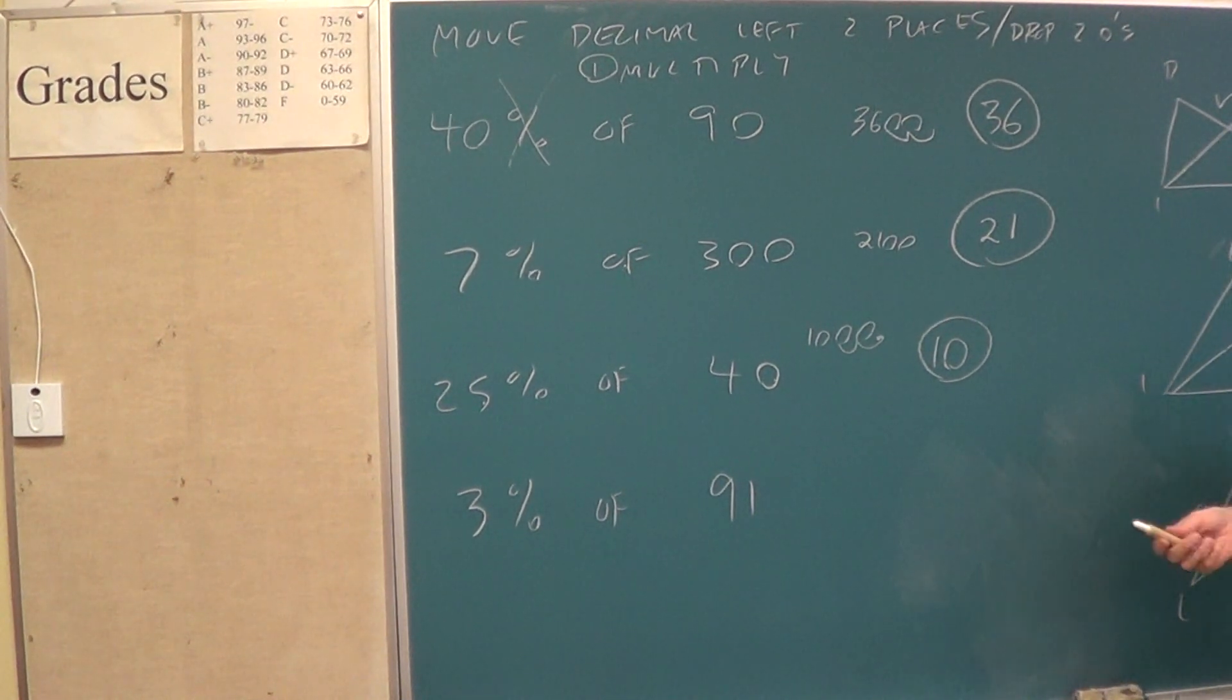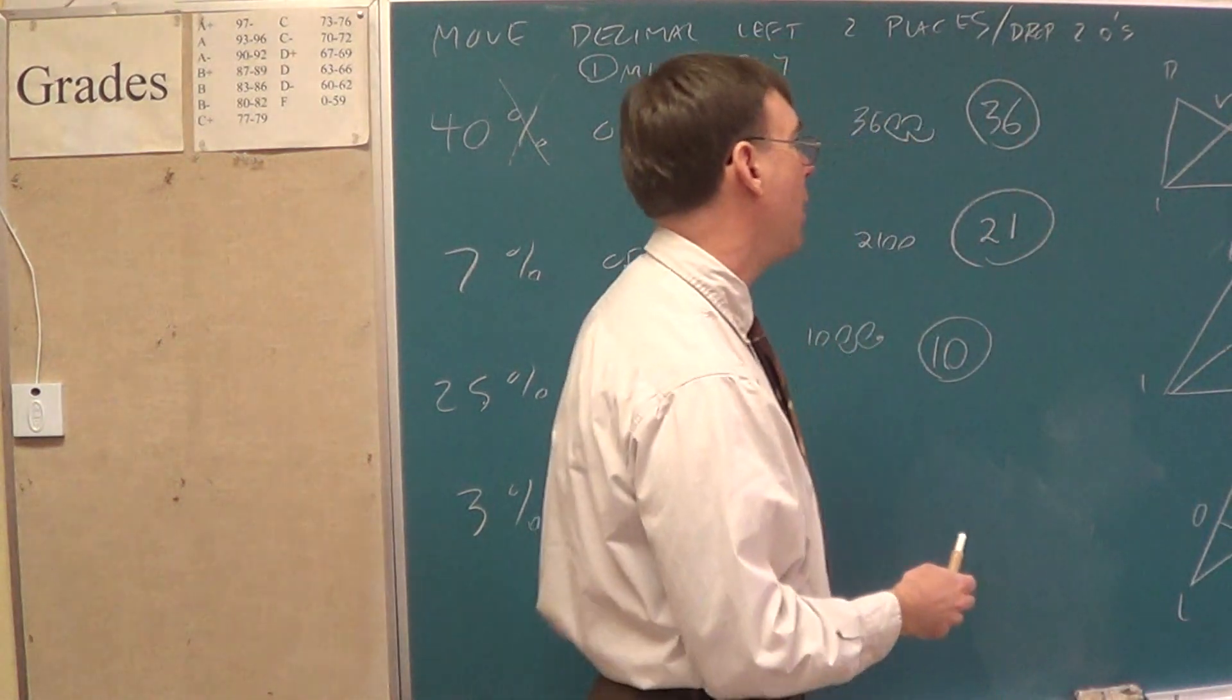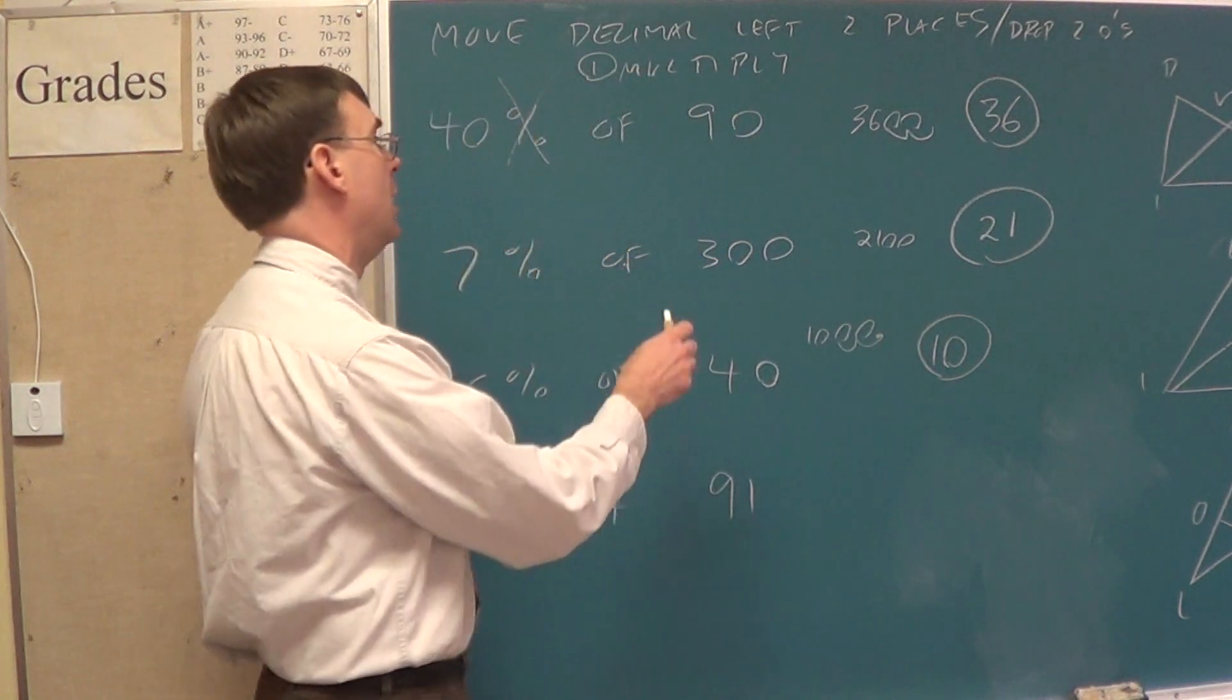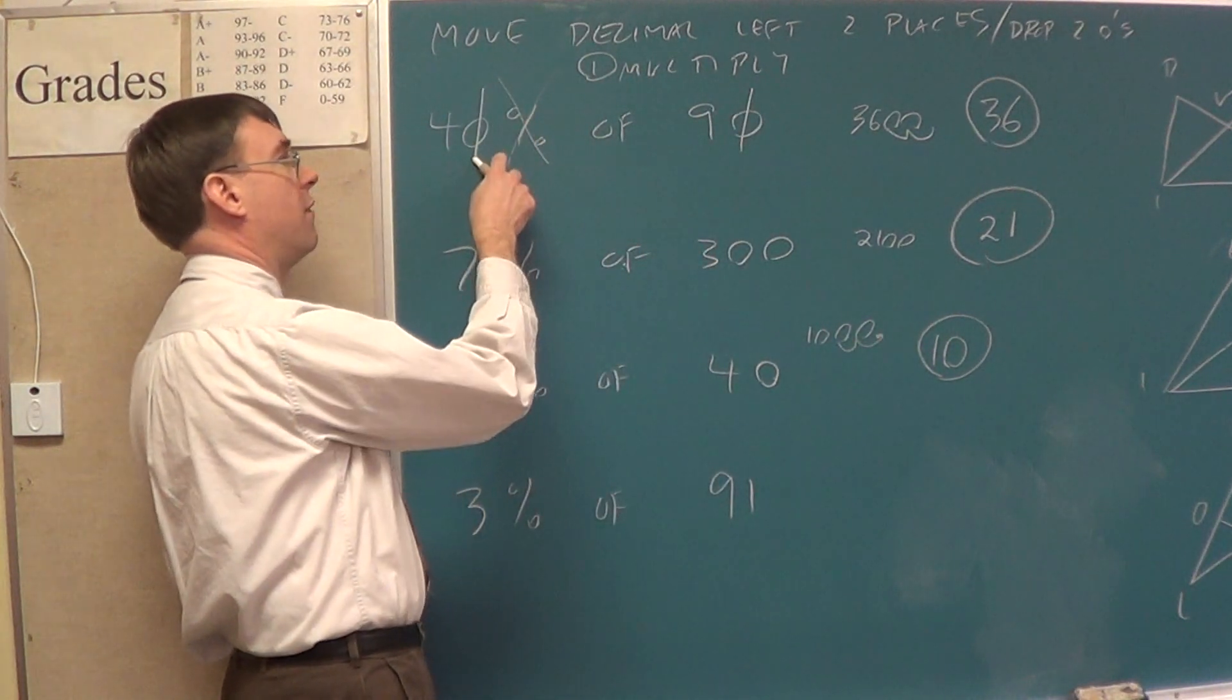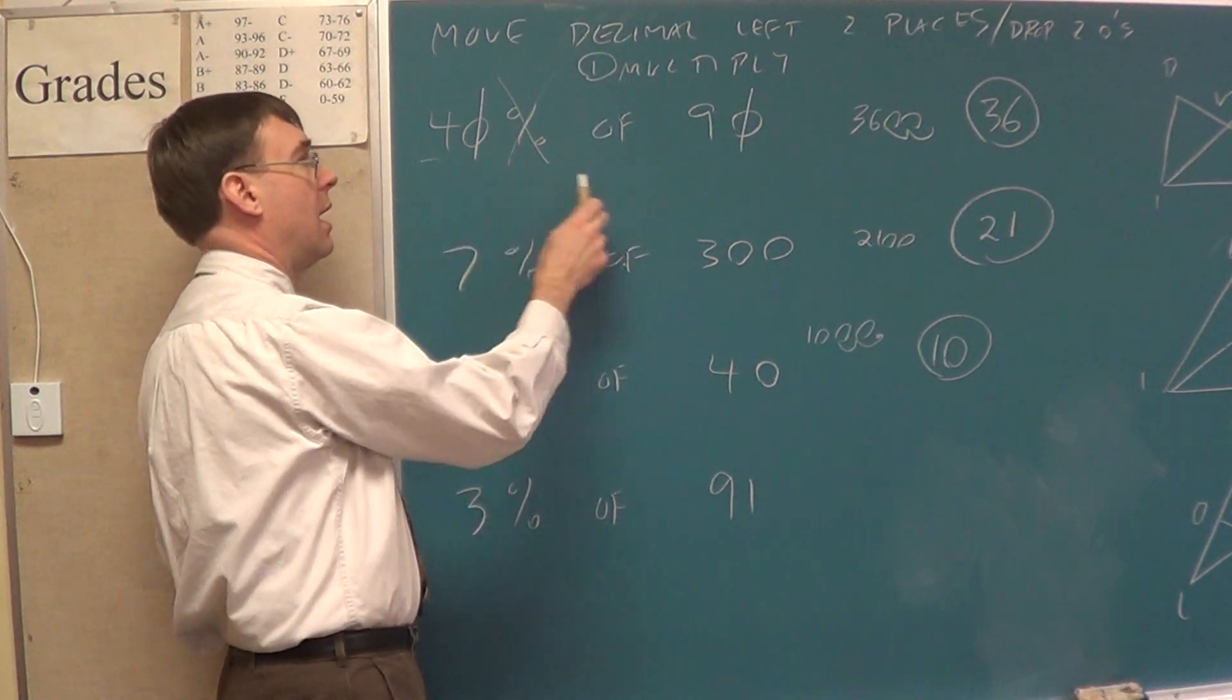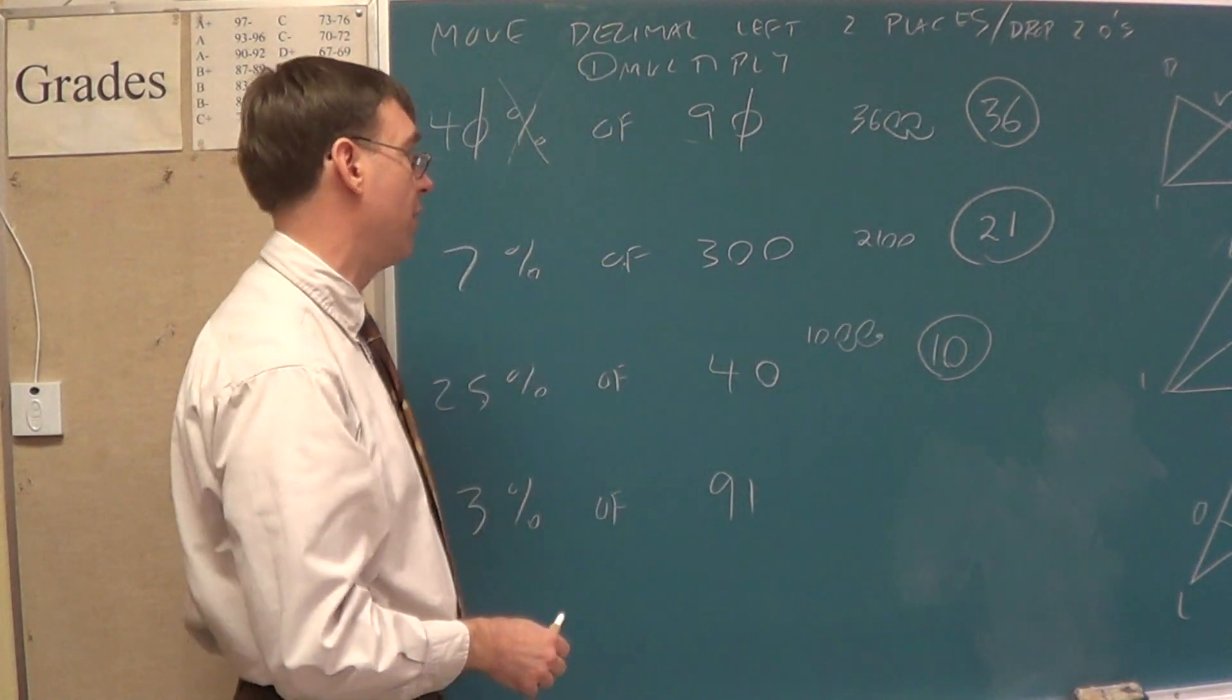If you want to see, if you see zeros, you can drop them. So, if I want to go rewind and do this in the fastest, fastest way possible, I would drop a zero from this. I would drop a zero from that. That took the place of moving the decimal left twice, and just 4 times 9 is 36. That's the quickest thing I could offer you.